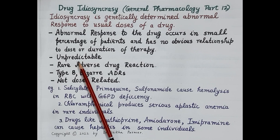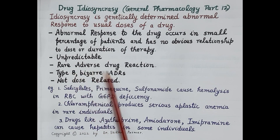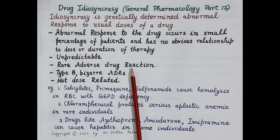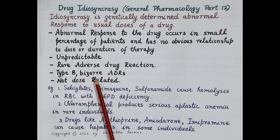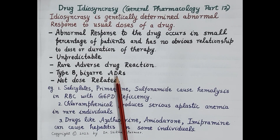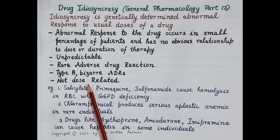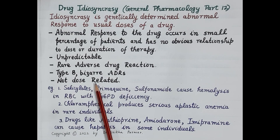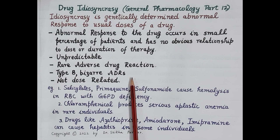These reactions are highly unpredictable and cannot be predicted by the pharmacology of the drug. Idiosyncrasy falls in the category of rare adverse drug reactions and is classified as Type B — bizarre types of adverse drug reactions — which are highly unpredictable and not dose-related. One important point to remember is that not all idiosyncratic reactions have a pharmacogenetic cause.